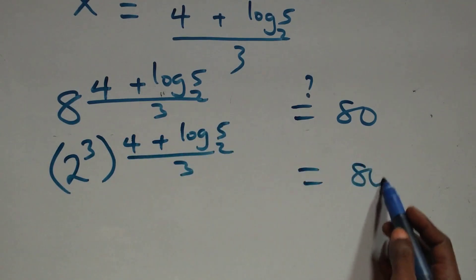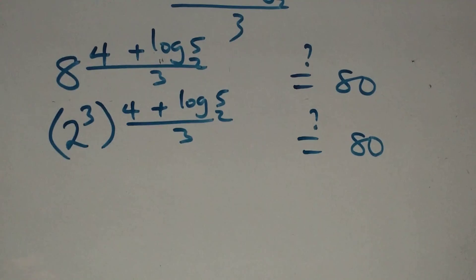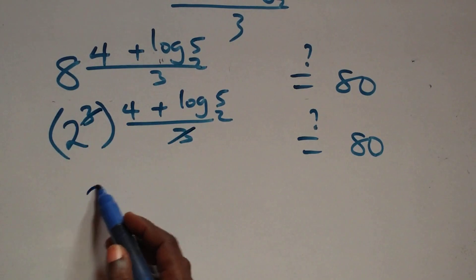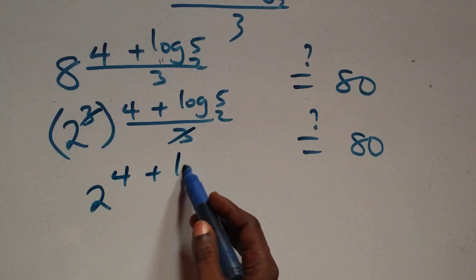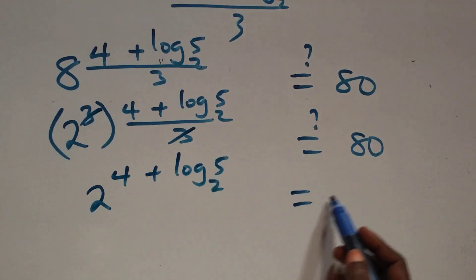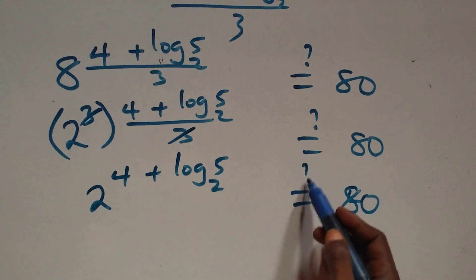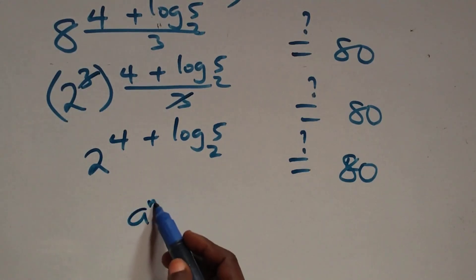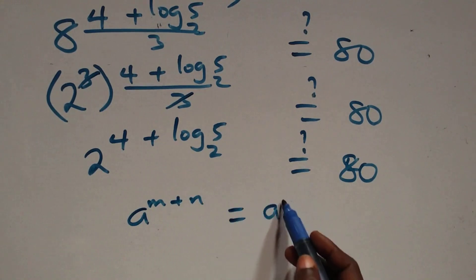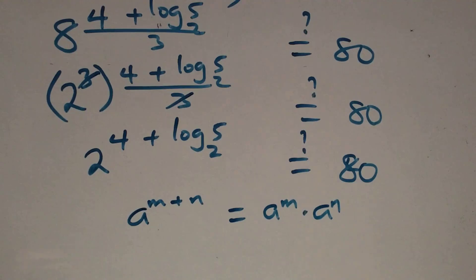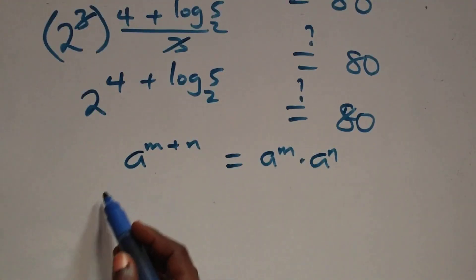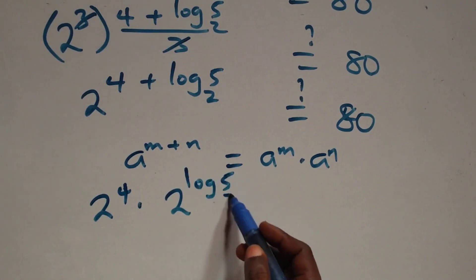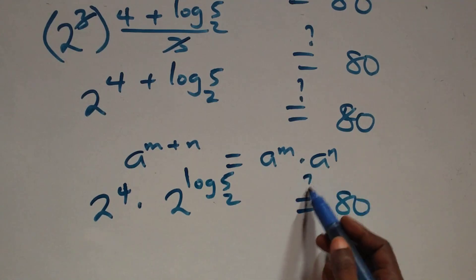Is it equal to 80 on this side? The powers multiply and 3 cancels, leaving 2 raised to the power (4 + log₂5). This follows the law of indices: a^(m+n) = a^m × a^n, so we have 2⁴ × 2^(log₂5). Is it equal to 80?